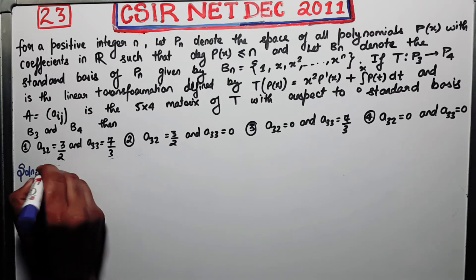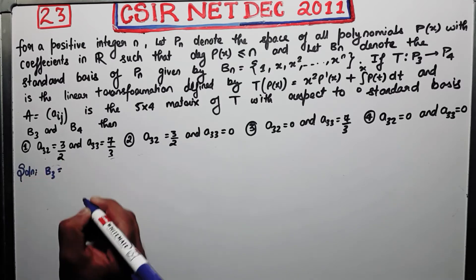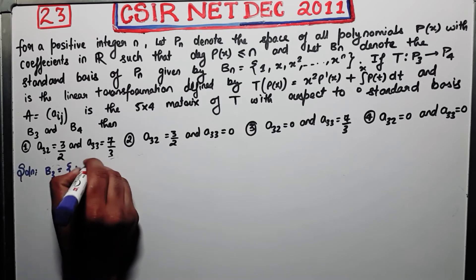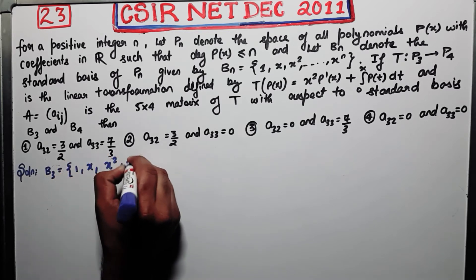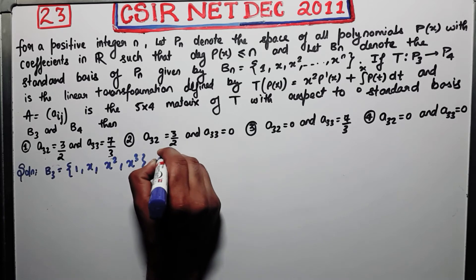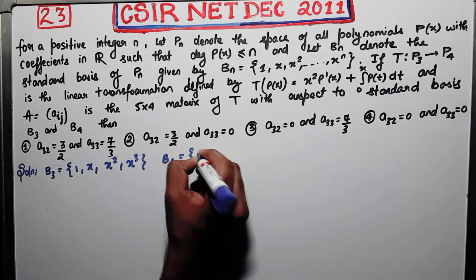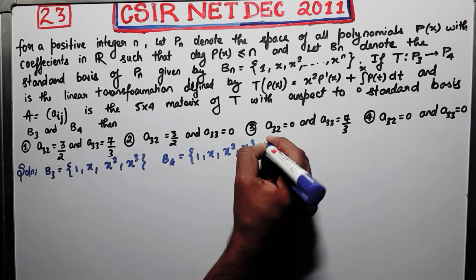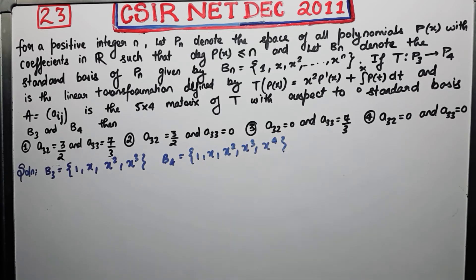So firstly what you have to do, you have to firstly write your basis. So what is your B_3? B_3 is 1, x, x², x³. What is your B_4? B_4 is 1, x, x², x³, x⁴. This is your B_4.